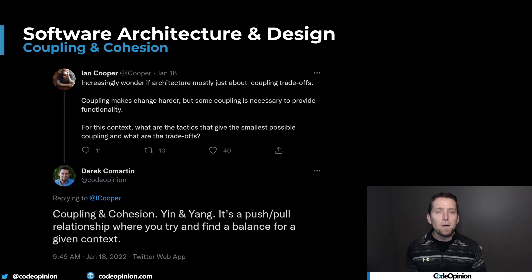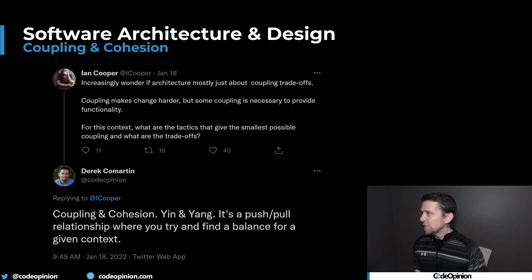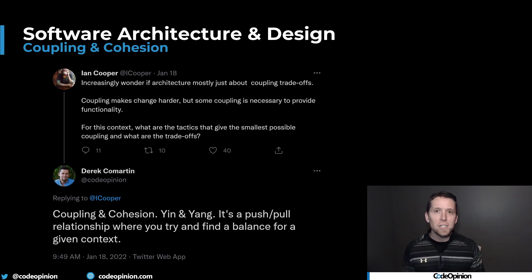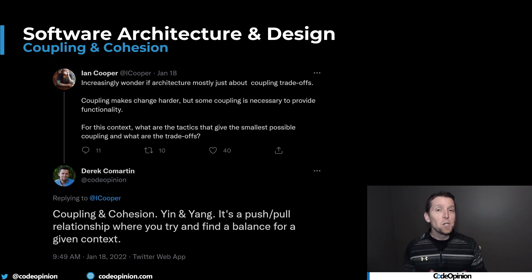The third piece of advice is to fundamentally understand coupling and cohesion. Ian Cooper posted a tweet saying he was increasingly wondering if architecture is mostly just about coupling trade-offs. Coupling makes change harder, but some coupling is necessary to provide functionality. What are the tactics to achieve the smallest possible coupling, and what are the trade-offs? To me, coupling and cohesion are a push-pull where you're trying to find balance. If you really fundamentally understand them in terms of software architecture and design, it gives you that center point to decide where the trade-offs are — because everything is about trade-offs. You want high cohesion and low coupling, which is easier said than done.